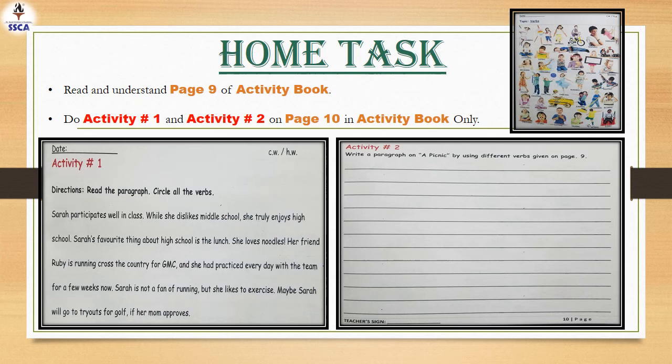Okay students, we are done with our classwork. Now it's time for your home task. In your home task, you have to read and understand page number 9 of your activity book — there are many verbs on page number 9. Then you have to do activity number 1 and activity number 2 on page 10 in your activity book. Activity book ka kaam ap activity book mein hi karenge. Write the date on both pages.